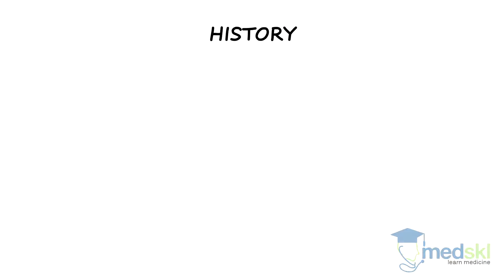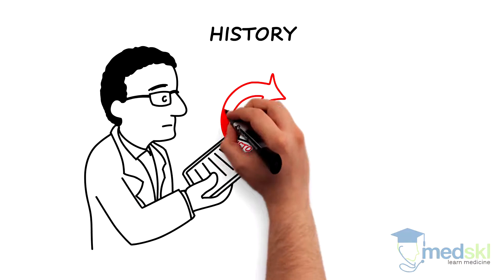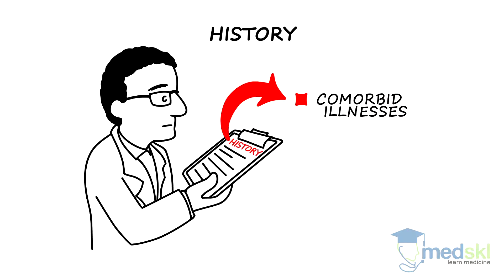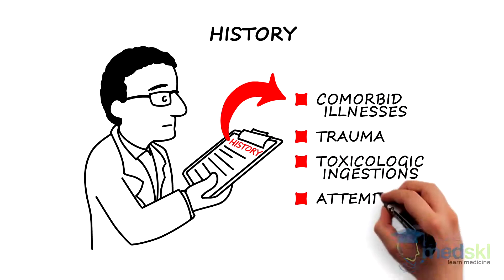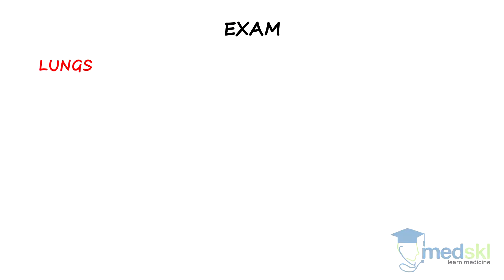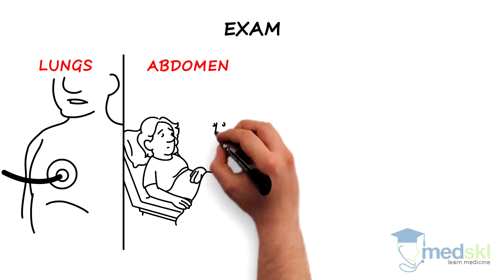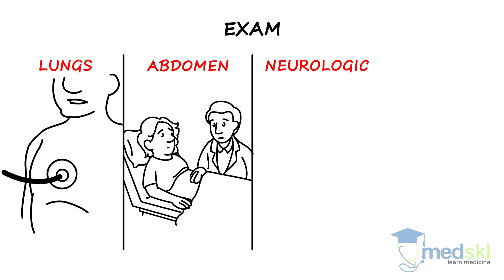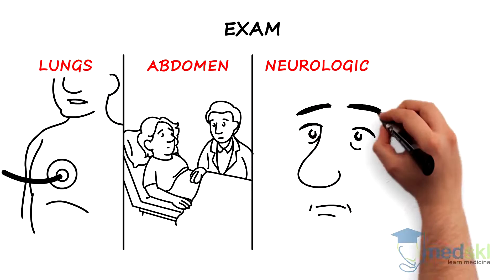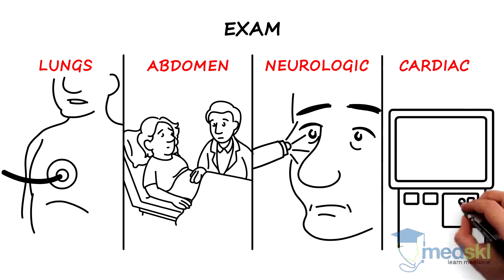The history should concentrate on factors that may require further evaluation, such as comorbid illness, trauma, toxicologic ingestions, or attempted suicide. On exam, auscultate the lungs for rales, abdomen for gastric distension from water ingestion, neurologic status for alterations due to hypoxia, and finally cardiac monitor for dysrhythmias.